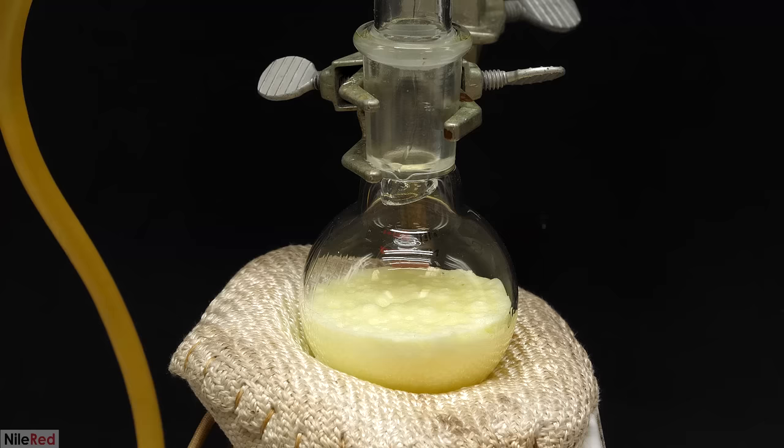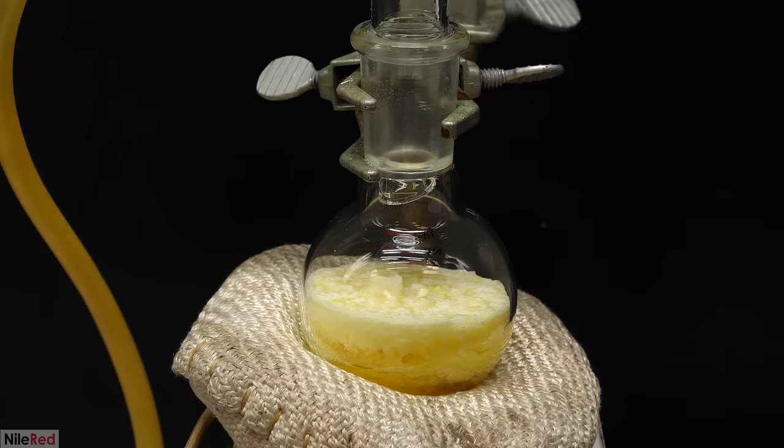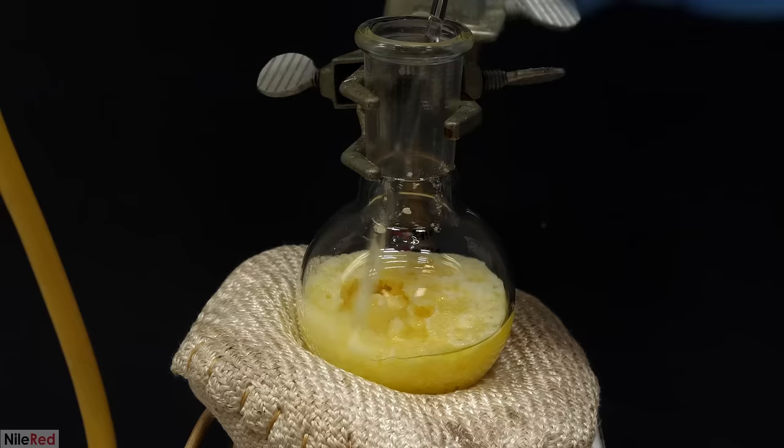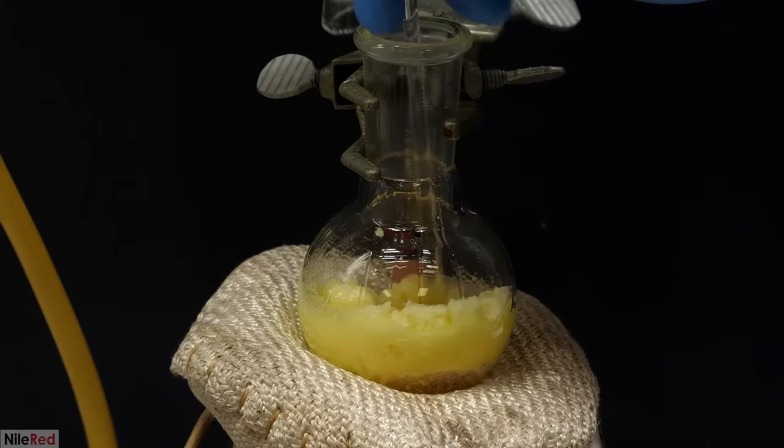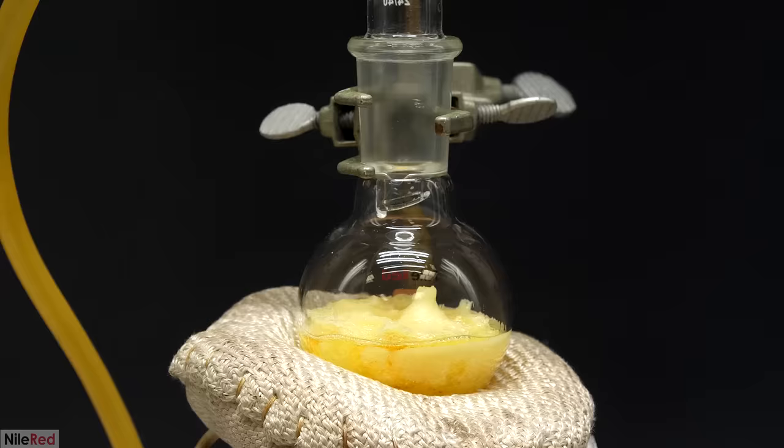The reaction that was happening here was exactly the same as what was happening before, I was just using heat to push it to completion. At around the hour mark, it looked like it was really getting jammed up with a lot of solid, so I took out the condenser and tried to break it apart. It kind of worked, and it gave me a more uniform slush, but I don't really think that this was that necessary to do. In any case, I boiled it for another hour, and then I took away the heating mantle.